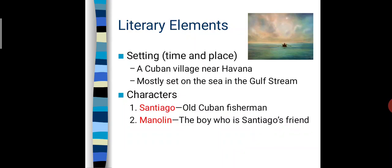The literary elements of 'The Old Man and the Sea': first is setting — time and place. A Cuban village near Havana is the setting, mostly set on the sea in the Gulf Stream. When you read the novel, you will understand how the old man and a particular boy went to the sea in the Gulf Stream and struggled for fishing. The major characters are Santiago, an old Cuban fisherman, and Manolin, the boy who is Santiago's friend.